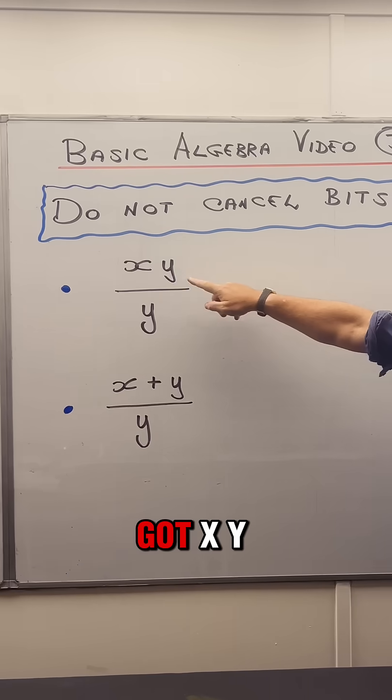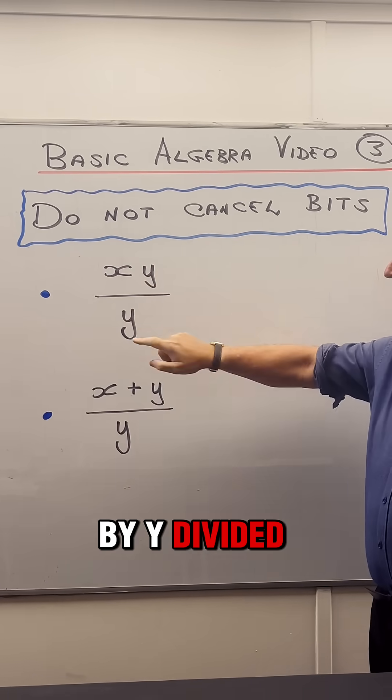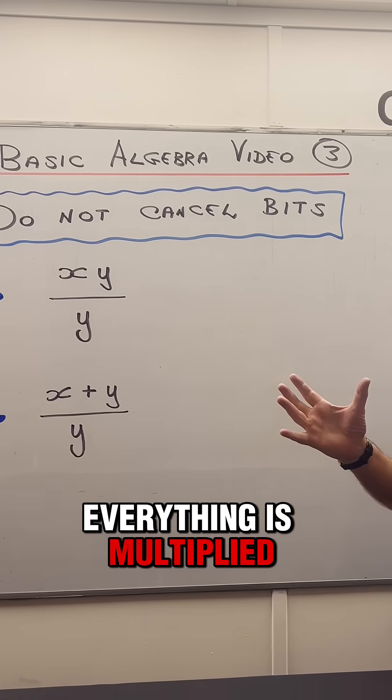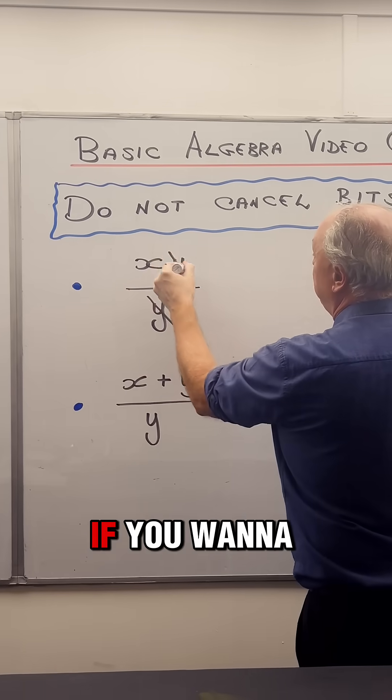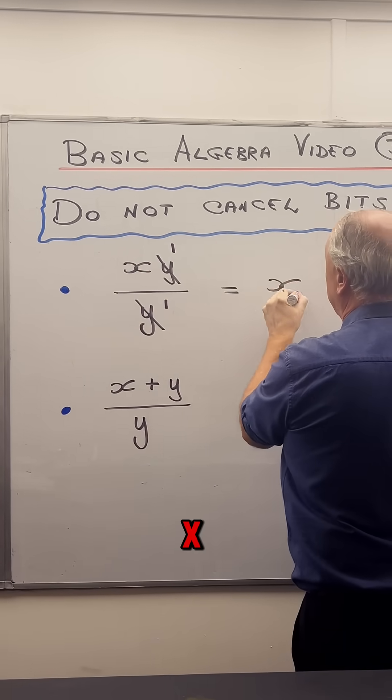Let's say I've got xy. That's x multiplied by y divided by y. Everything is multiplied together. So I can cancel away. I can say y into y. If you want to put the ones in you can and my answer is x.